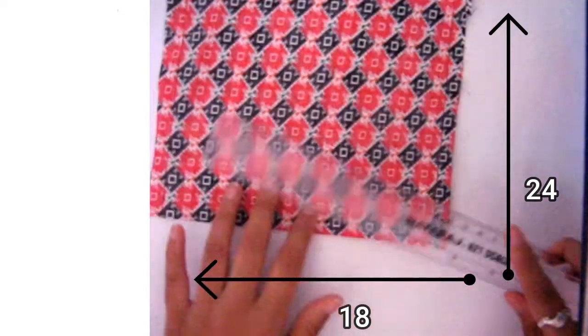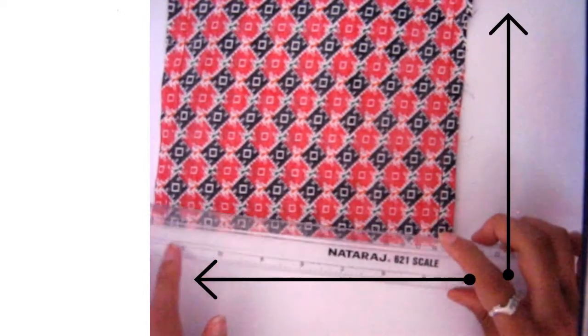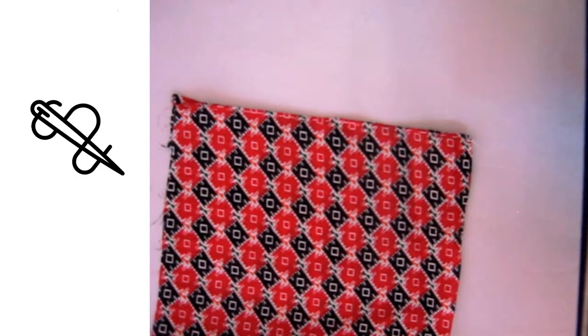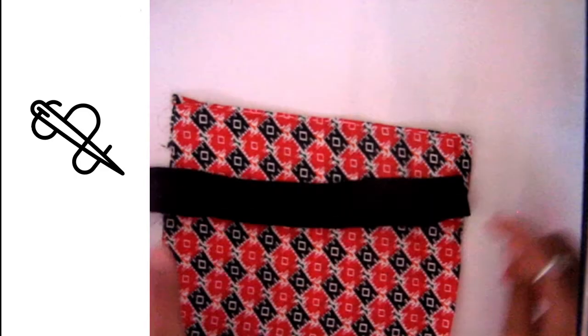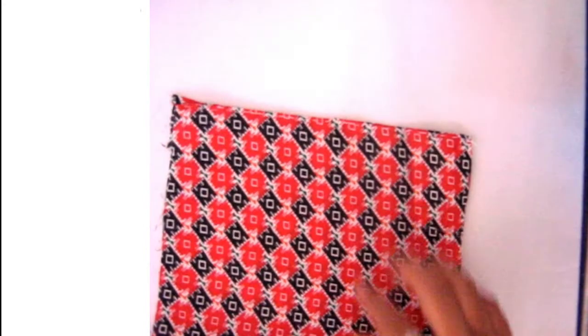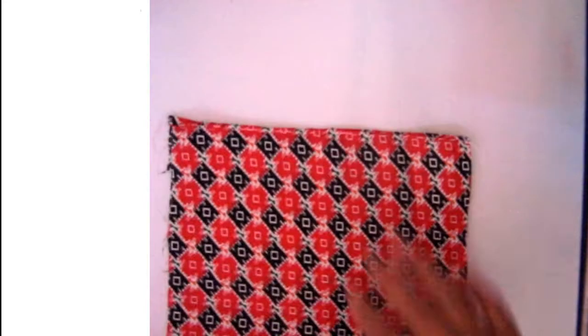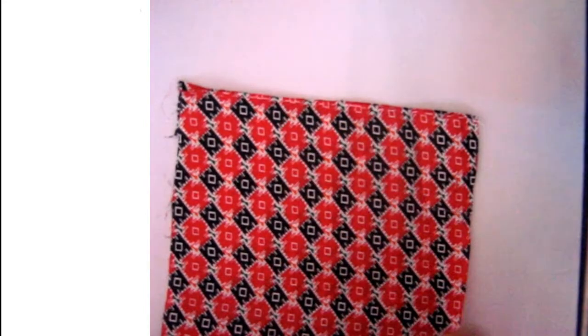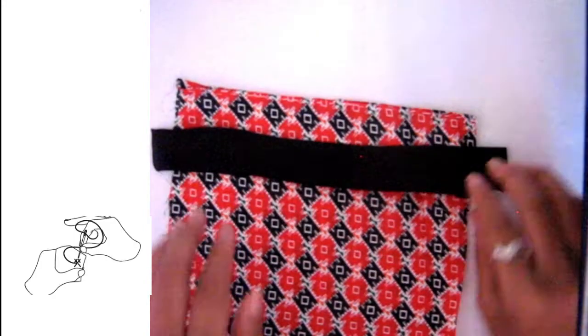The size of fabric I cut is 18 by 24 centimeters, but you can cut any size you want to make. Now I place a stripe on the top of the fabric so I can put ribbon inside of that black fabric.